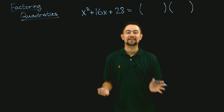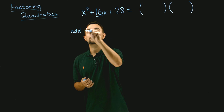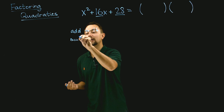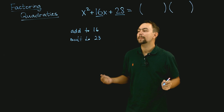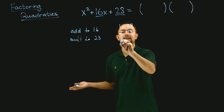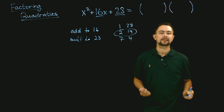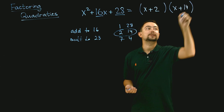Another example: x squared plus 16x plus 28. We need two numbers that add to 16 and multiply to 28. What gives us 28 when multiplied? 1 and 28, 2 and 14, 7 and 4. Do any of them add to 16? Yes — 2 and 14 add to 16. So the answer is x plus 2, x plus 14.